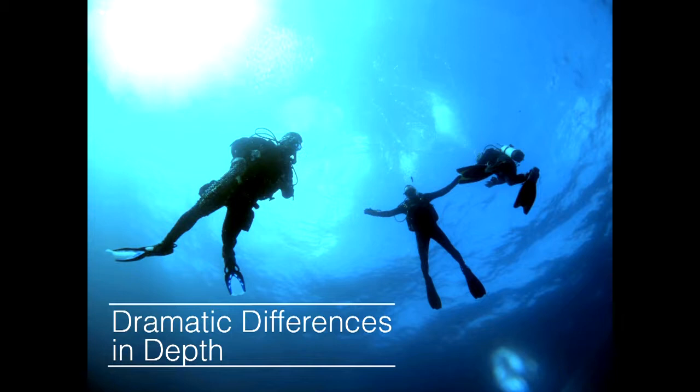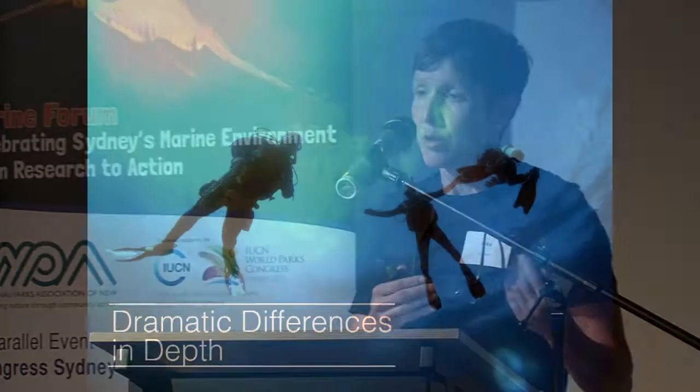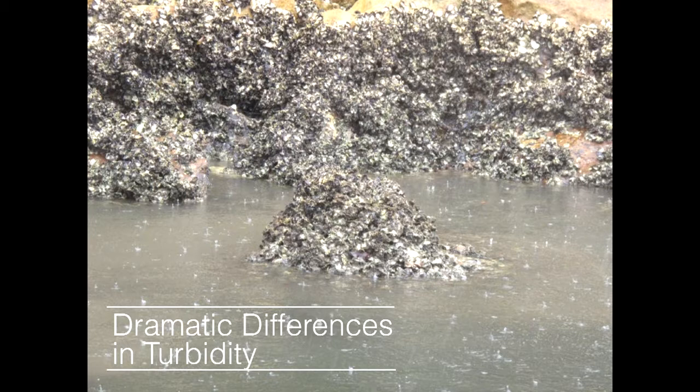In the harbour we have dramatic differences in depth — from the shallows and beaches to really quite deep spots. The deepest spot is just west of the harbour bridge at about 45 metres, a muddy hole. On average the outer harbour is between 20 and 25 metres deep. We also have dramatic differences in turbidity — the cloudiness or murkiness of the water. You have fairly clear water in the outer harbour where it's well flushed, but quite murky water in the upper estuary and Parramatta River, where there is a lot of primary production and re-suspension of fine sediments.